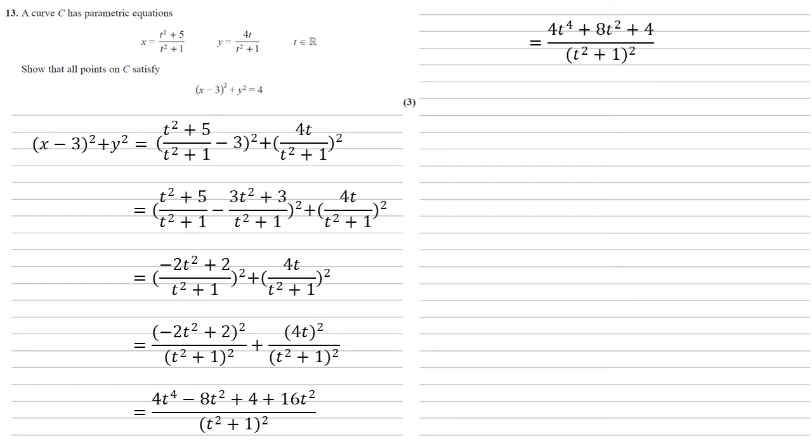Simplifying the top gives us 4t to the power of 4 plus 8t squared plus 4, all over t squared plus 1 all squared. Well, all of those terms on the top are multiples of 4, so let's factorize out that 4.